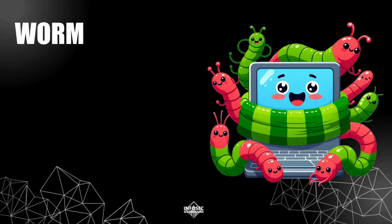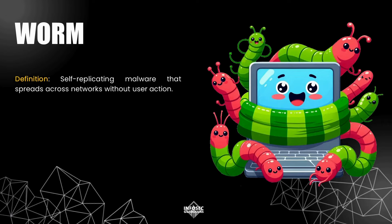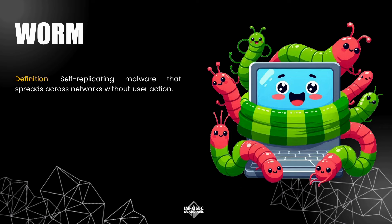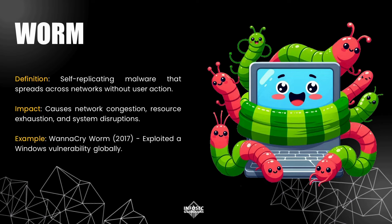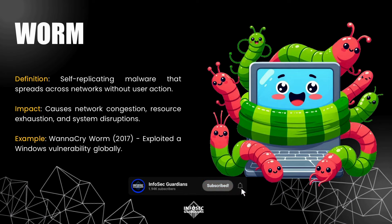Next, let's talk about worms. Unlike viruses, worms are self-replicating — they don't need any user interaction to spread. Worms can move across networks, exploiting vulnerabilities in systems to spread from one computer to another. The impact of a worm can be devastating; they can cause network congestion, exhaust system resources, and lead to significant disruptions. A well-known example is the WannaCry worm from 2017, which exploited a vulnerability in Windows systems and spread globally, causing billions of dollars in damage.